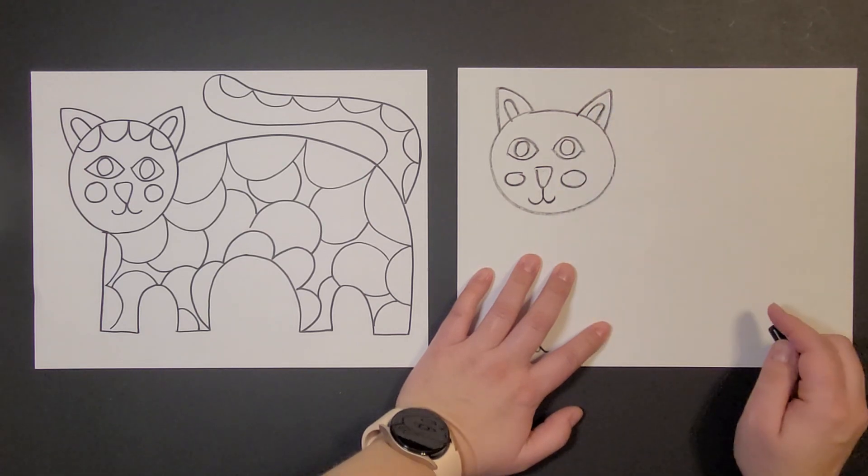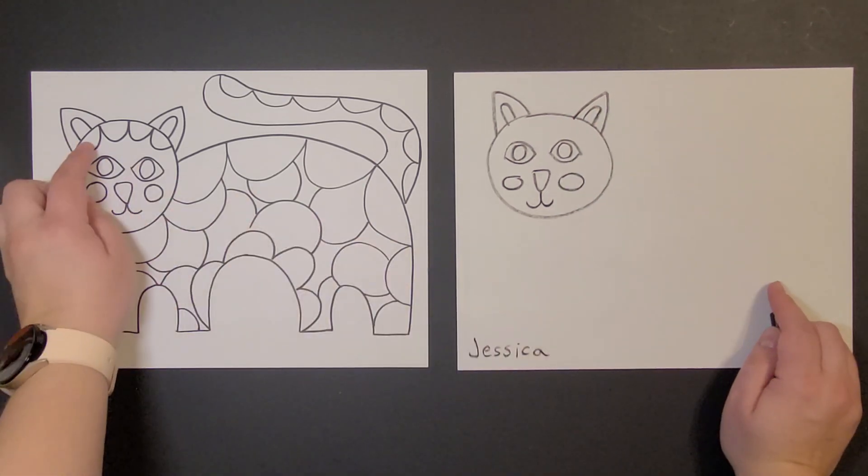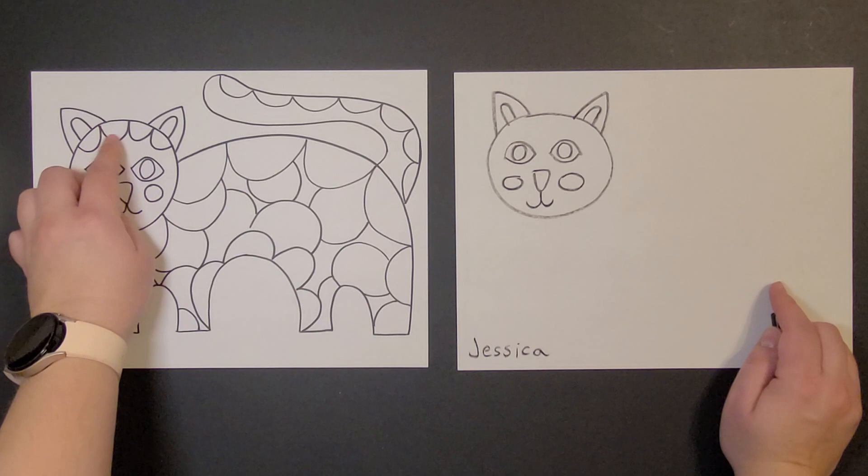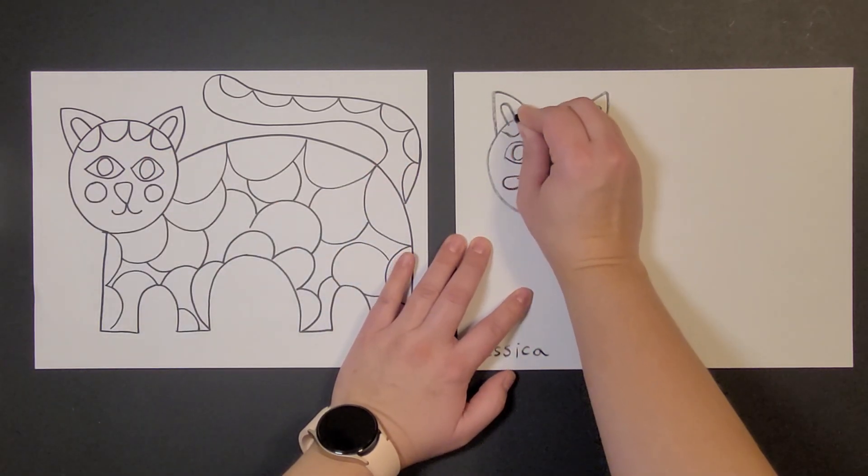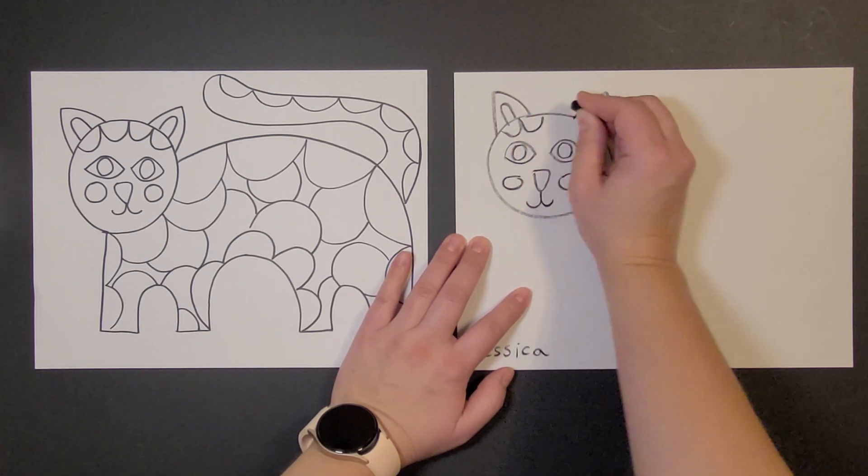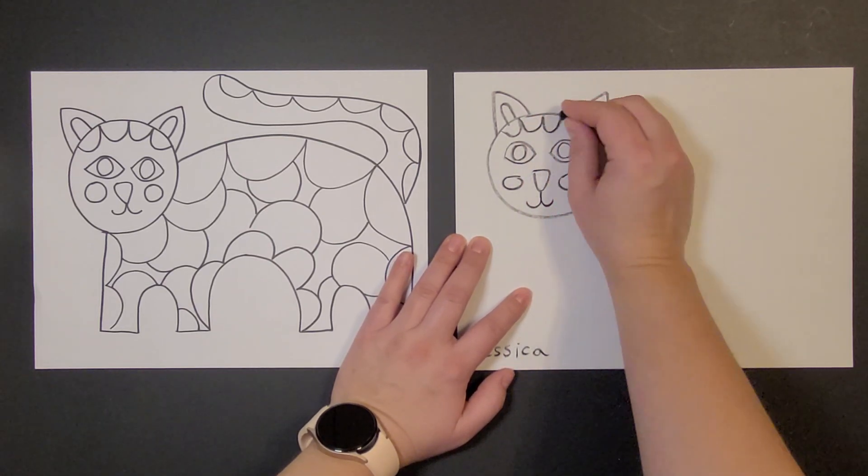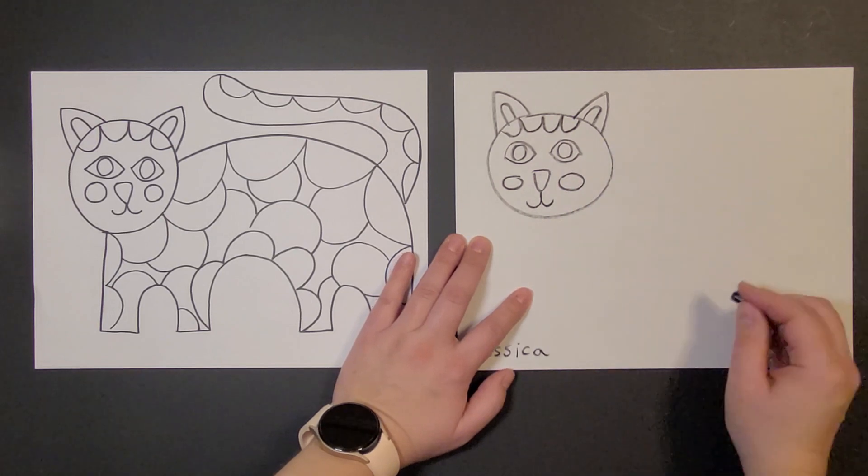Now yours probably looks different than mine. That's okay. I'm gonna put four little U's right here along the top and if you don't want to do four, if you want to do three or five, you get to do however many you want. That's the neat thing about art is they all end up looking differently.